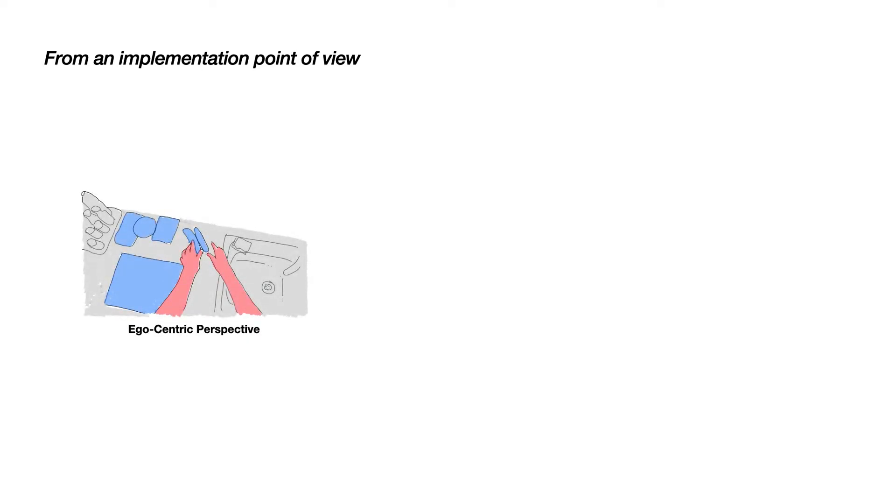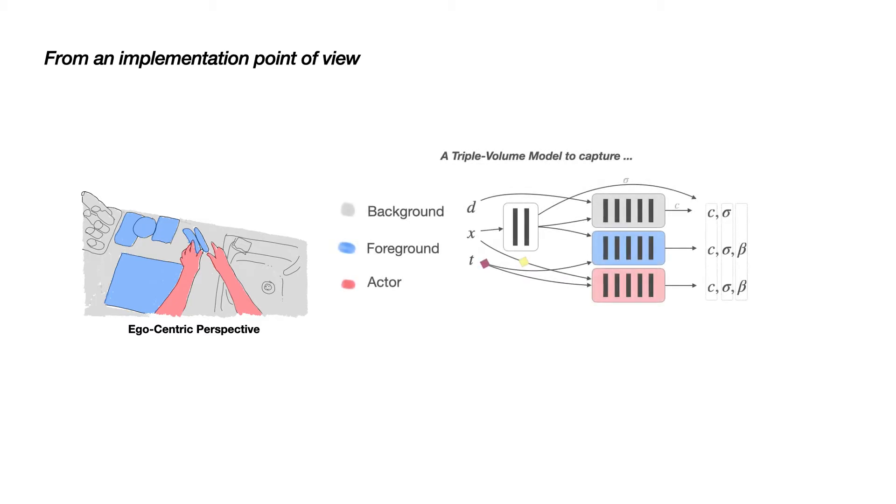Here we see how the combined model looks like from an implementation point of view. We model each volume with MLPs, where the background and foreground model also share some initial layers. We have three inputs: viewing direction, position, and time. The foreground and actor model also produce uncertainty scores to model the dynamic parts. Additionally, we also include further tricks such as smooth dynamics for the time and proposed principled color mixing. These and further features are explained in the paper.